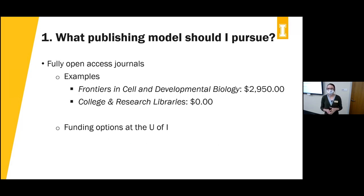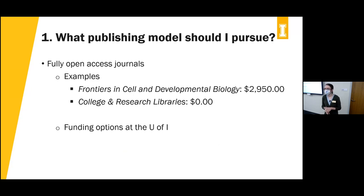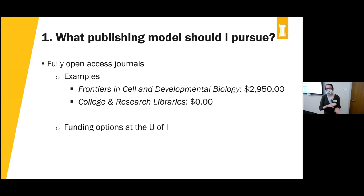Publishing charges used by open access journals vary just like subscription charges do. Frontiers in Cell and Developmental Biology charges authors or their institutions $2,950 to publish open access, whereas a journal like College and Research Libraries charges nothing. So open access journals, instead of putting the cost of access onto the reader, ask authors, their institutions, or granting agencies to pay a one-time fee so everyone has access to the research.